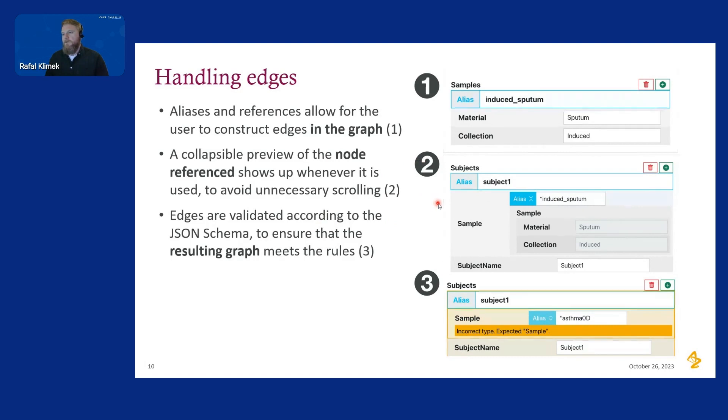We have the JSON schemas which are in charge of providing validations and the structure of the graph. They also take care of validating those referenced objects. For example, if in the subject node we have a sample that is not defined or is the wrong type, we use a reference of a wrong type, it will also get flagged right away. In this way we ensure that the resulting graph meets the rules and can be saved.